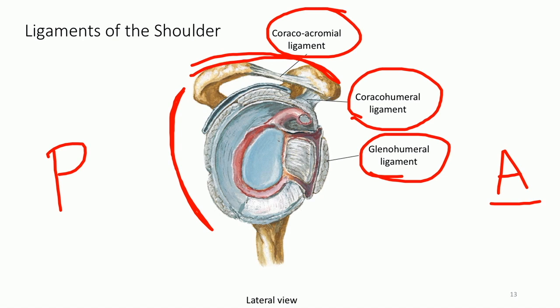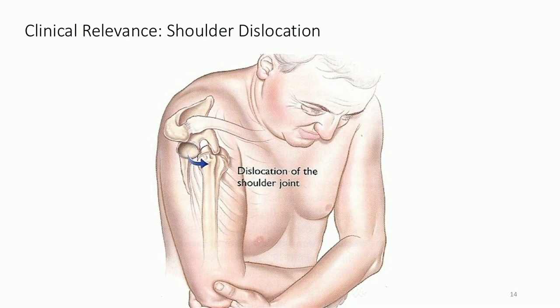Because of this limited anterior support, there are important clinical implications. With shoulder dislocation, the head of the humerus comes out of the glenohumeral joint, and the most common location for this dislocation is on the anterior side.